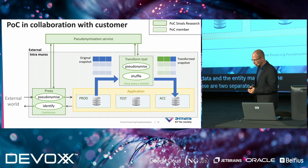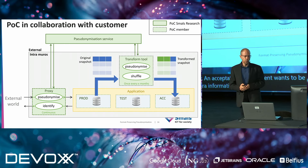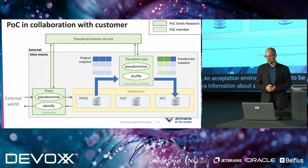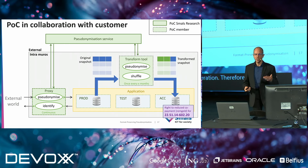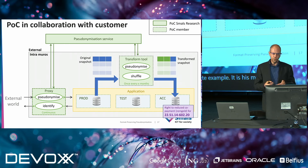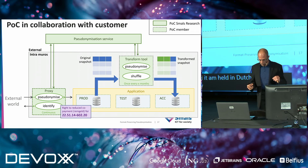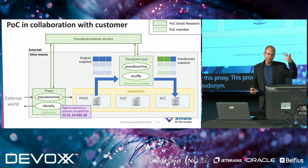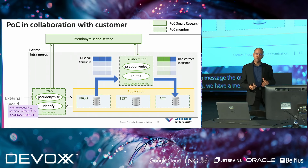An acceptation environment also wants to communicate with the external world — to ask extra information about certain persons from external services. Therefore we add a proxy. Here is a concrete example: the acceptation environment wants to know if a citizen it only knows under pseudonym 22.51 has the right to a reduced co-payment. This message is intercepted by the proxy, which extracts the pseudonym, asks the pseudonymization service to convert it back into the original identifier, and replaces the pseudonym in the message with the original social security number — a message the external world can answer.